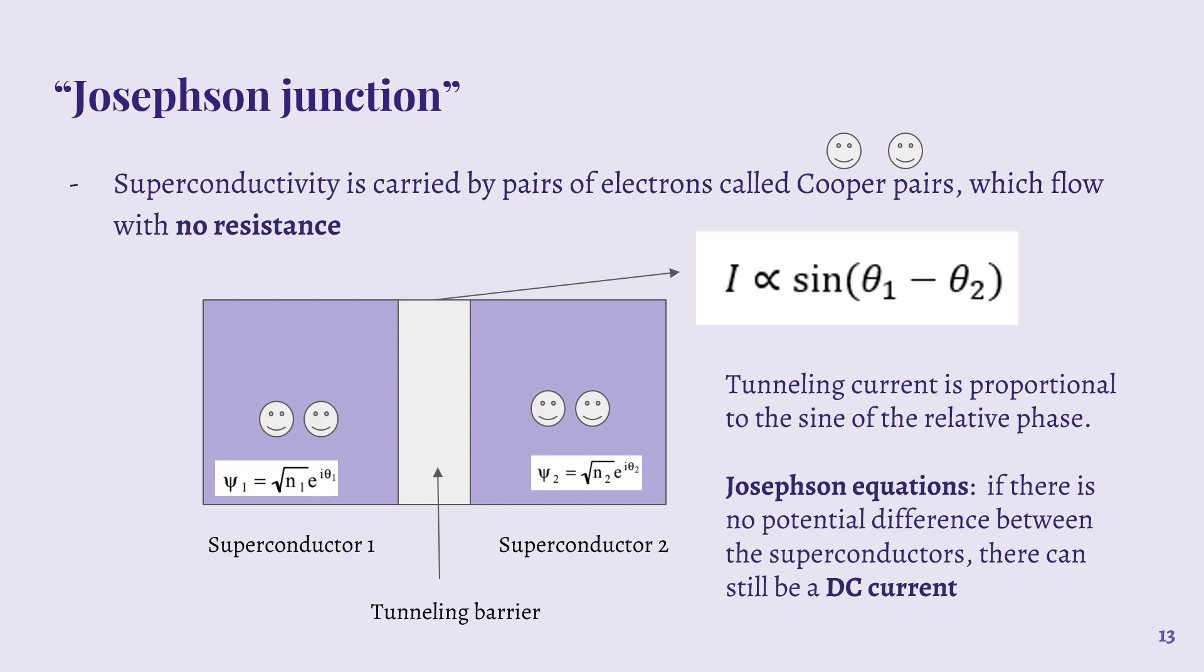A big part of the Josephson junction is the relative quantum phase between the wave functions for the Cooper pairs in two superconductors on opposite sides of the tunneling barrier. So this is the relative quantum phase for the wave function, and all of the Cooper pairs will share the same wave function because they are in a correlated state.